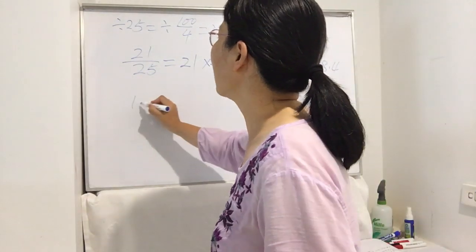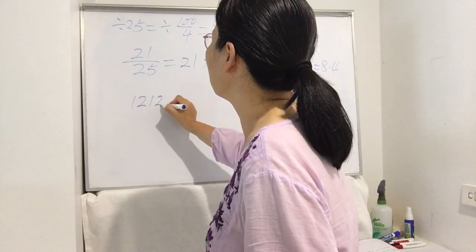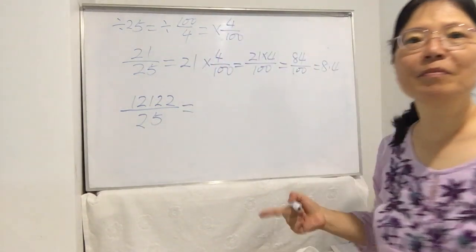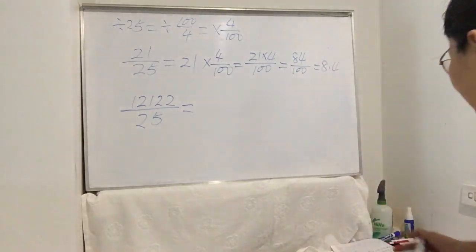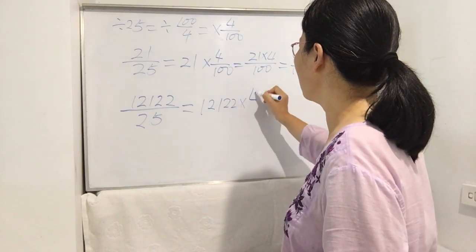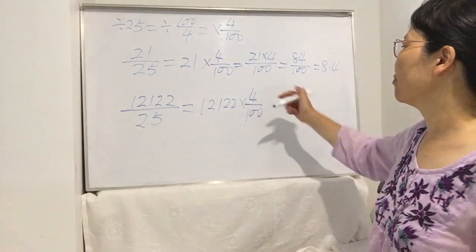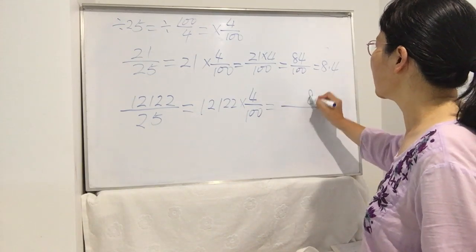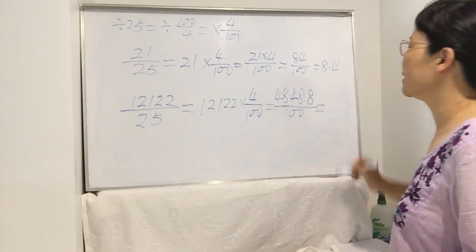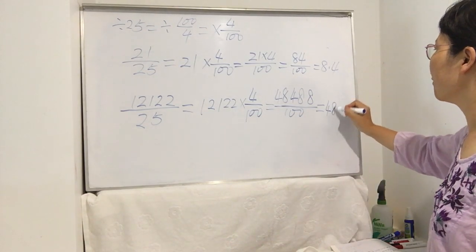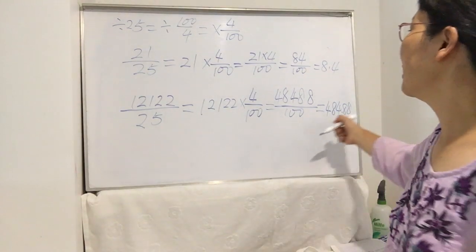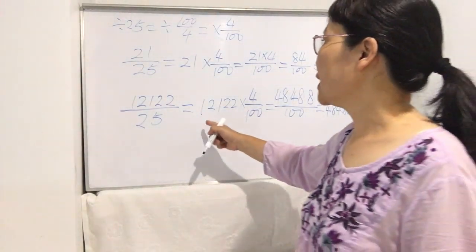Let's try a bigger number: 1221 divided by 25. Use the same technique: 1221 times 4 divided by 100. Let's work out 1221 times 4 — that's 4884, divided by 100, so the answer is 48.84. Even with bigger numbers, dividing by 25 is fast if you just remember times 4 divided by 100.